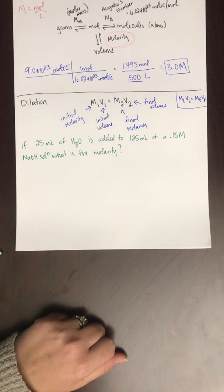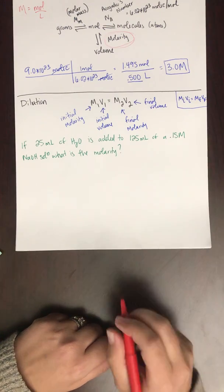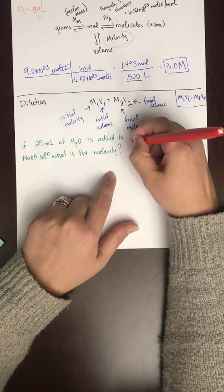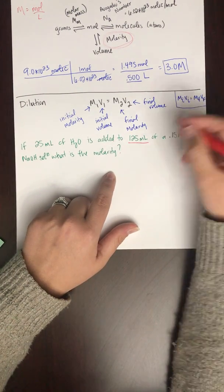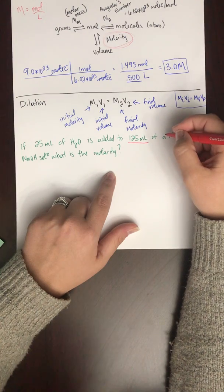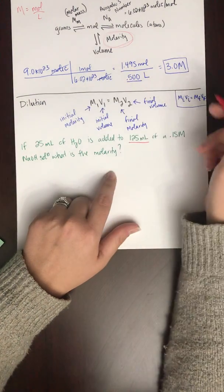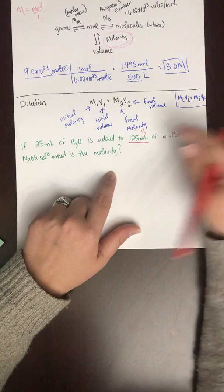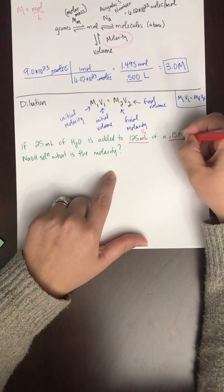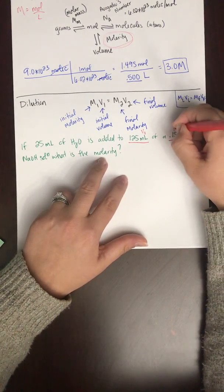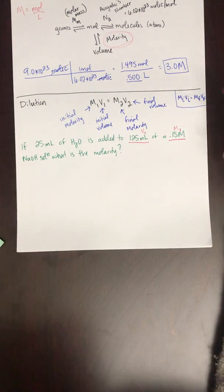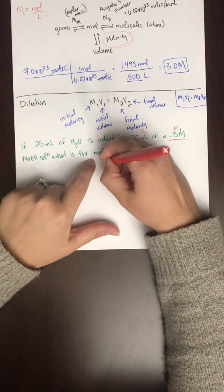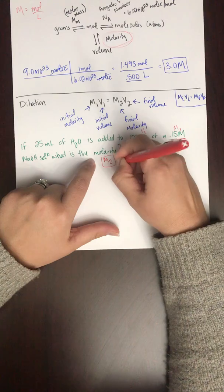So let's just go through and identify what is happening in this problem. So 25 milliliters of water is added, let's come back to that in a minute, to a 125 milliliter solution of a 0.15 molar sodium hydroxide solution. So 125 milliliters, this is my initial volume, that's V1. 0.15 molar, that's my initial molarity, that's M1. So this problem doesn't come right out and say what M2 or V2 is. It asks what's the final molarity, that's M2. This is what I'm solving for. What is M2?